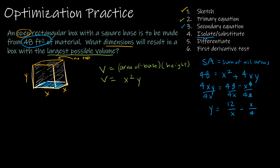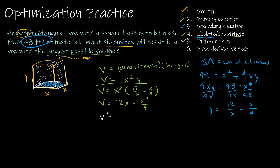Now I substitute back into the primary equation. Volume equals x² times y, replacing y with (12/x − x/4): V = x²(12/x − x/4) = 12x − x³/4. Now I differentiate: V′ = 12 − 3x²/4.